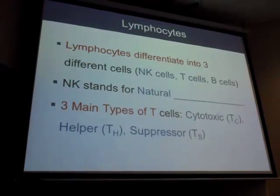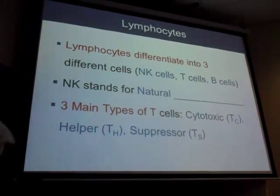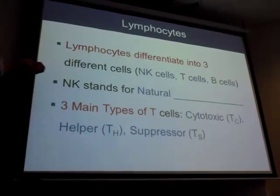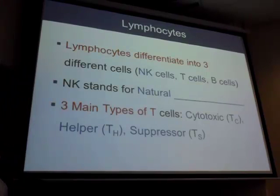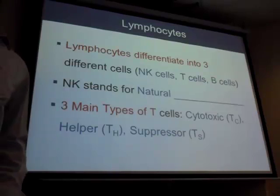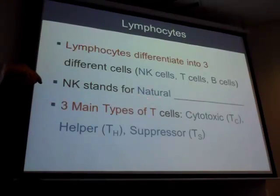Lymphocytes differentiate into three: natural killer, T, and B cells. T and B cells are adaptive/specific. NK cells are innate/non-specific — they naturally kill everything the same way. NK stands for natural killer. We'll now look at these three cell types specifically using video clips.